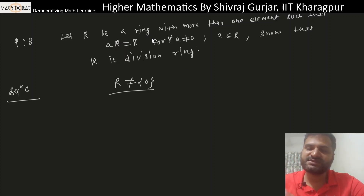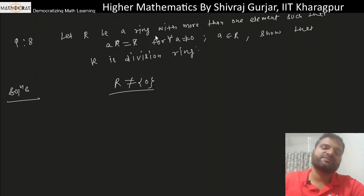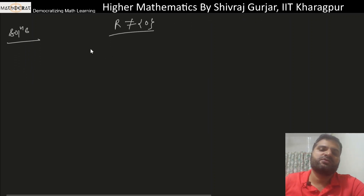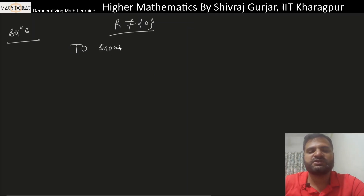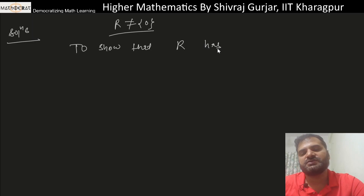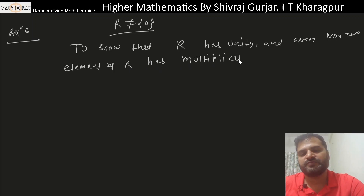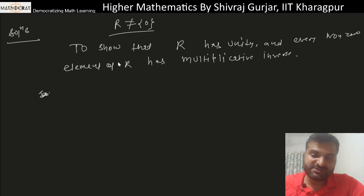We are given that this is a ring, and we need to show that it has unity and that every non-zero element has a multiplicative inverse — then only it will be a division ring. A division ring is a ring with unity in which every non-zero element has a multiplicative inverse. So these are the things we need to prove.